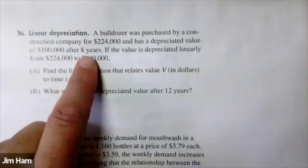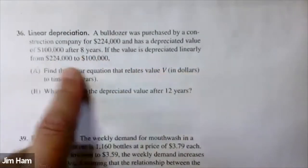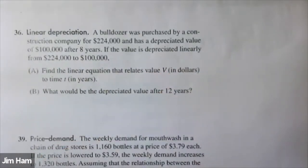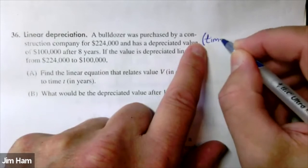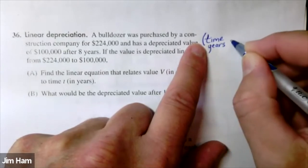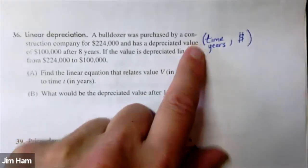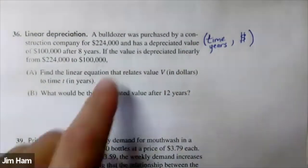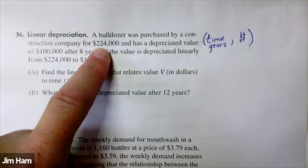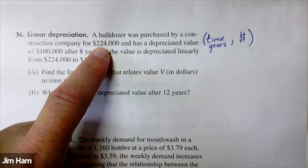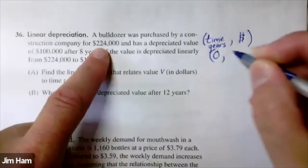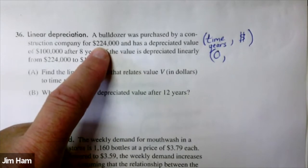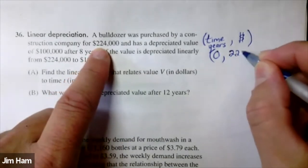It'll lose its value. If the value is depreciated linearly, we know that there's a linear relationship between these two points. We're going to write two points: one is the time in years, and the other is the value of the bulldozer. At the beginning, when they first purchase it, this is at time equals zero. So when it's purchased for the very first time, no time has elapsed — time zero, the value is $224,000.